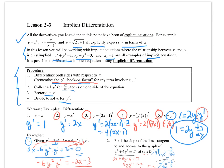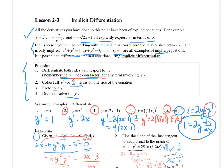To summarize: differentiate both sides with respect to x, collect all y prime terms on one side, factor out the y prime, and divide by whatever is next to the y prime to solve for it. That's implicit differentiation. Remember that the derivative of a constant is 0, and whenever you take the derivative of anything with y, hook on that y prime at the end. Thanks — this is Lesson 2.3 Implicit Differentiation. Have a great day!